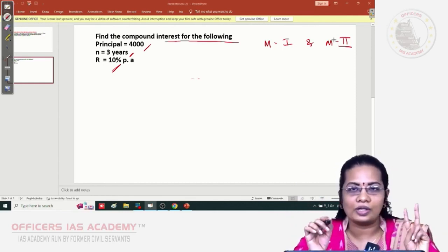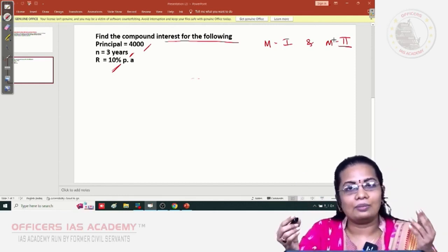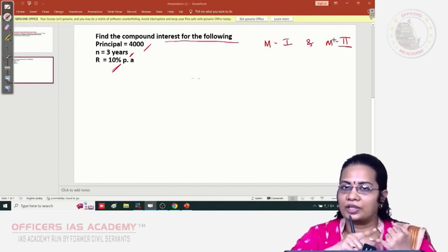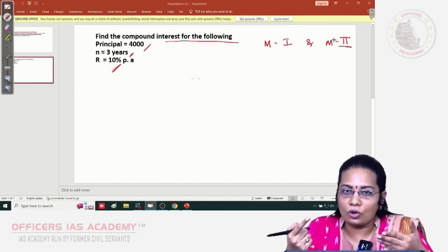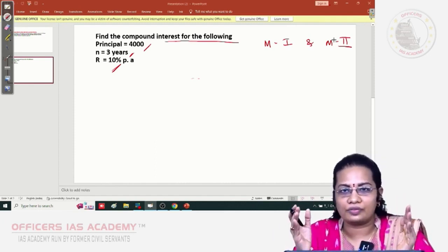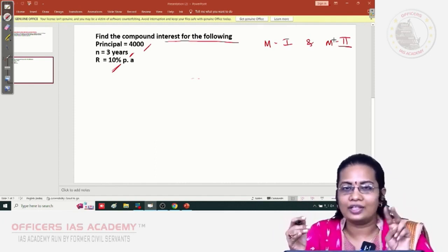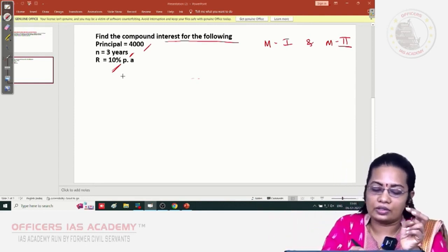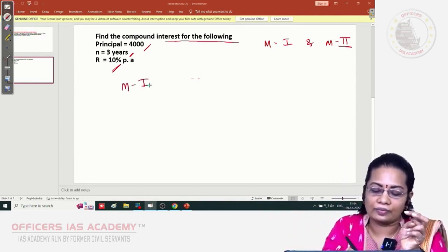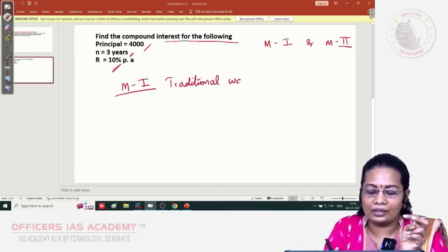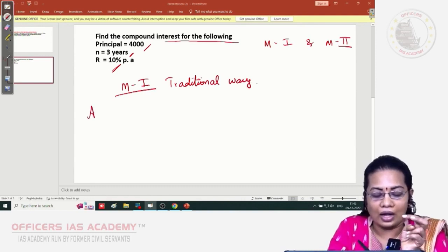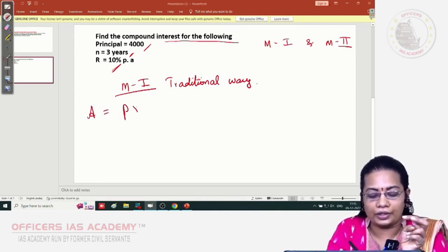We are going to deal with two types of methods here. Under method 1, the traditional way, for compound interest we have the standard formula: Amount = Principal × (1 + R/100)^n.